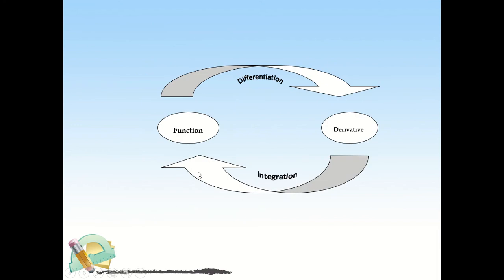Here is the illustration: if you are given a function and the process used is differentiation, you arrive at a result called the derivative. Now, from this result, if you want to go back to the function, you do anti-differentiation, which is the integration process, and you will get back to the original function. This is just a cycle — differentiation gives you the derivative, and anti-differentiation brings you back to the function.